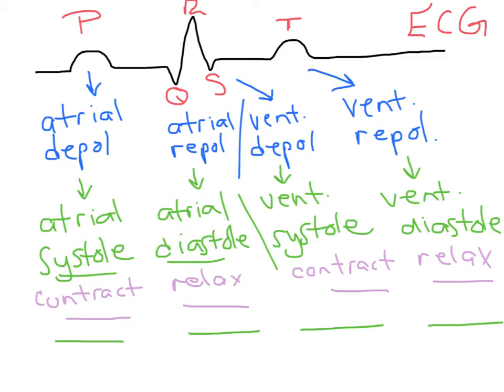Starting here, the P wave of the electrocardiogram represents atrial depolarization, which then leads to atrial contraction. The QRS includes atrial repolarization and ventricular depolarization. The atrial repolarization is not seen in the QRS because ventricular depolarization occurs at the same time.